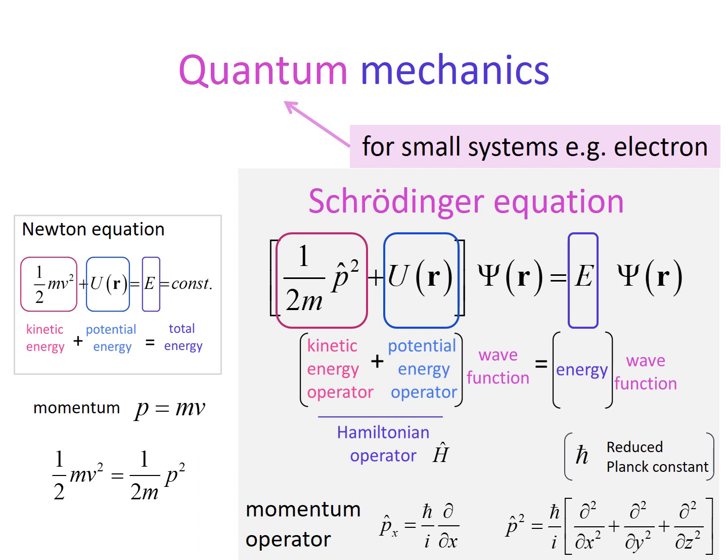For small systems, such as an electron, which is very important to understand chemistry, we need to think about different laws, called quantum mechanics. The main quantum mechanics equation is called the Schrödinger equation.